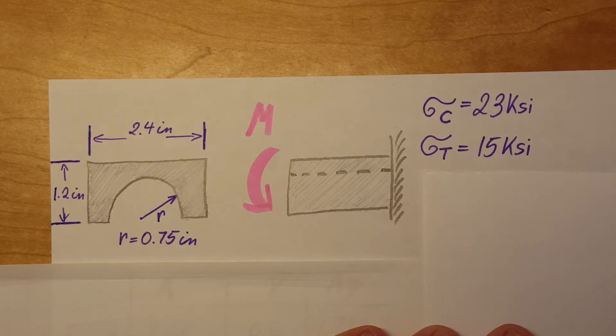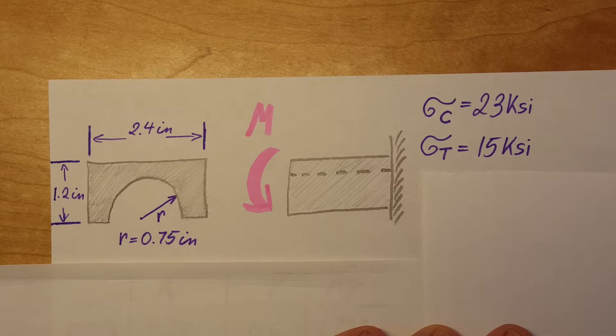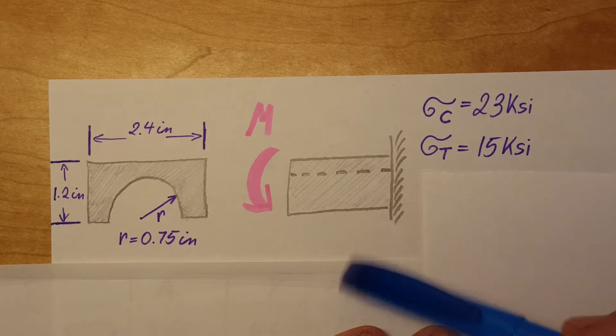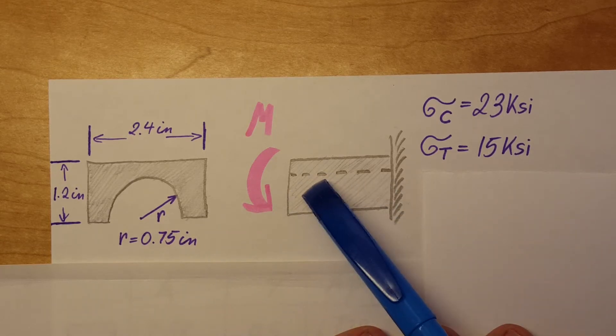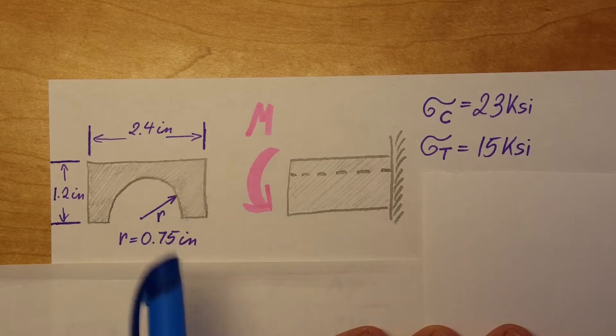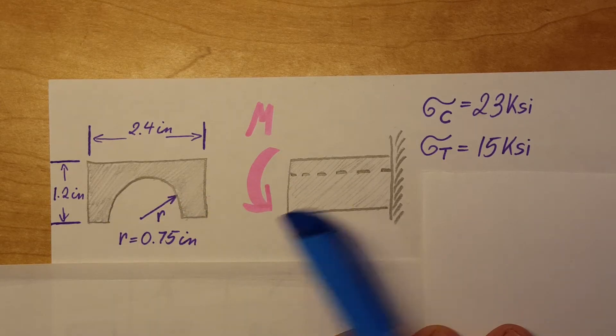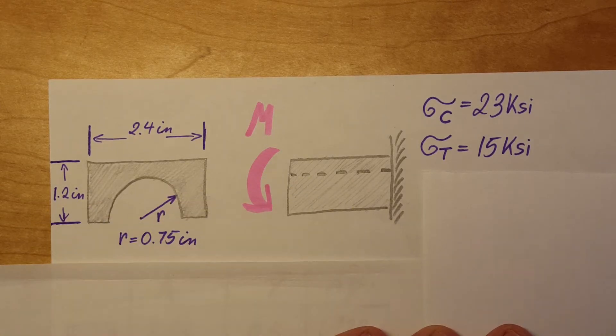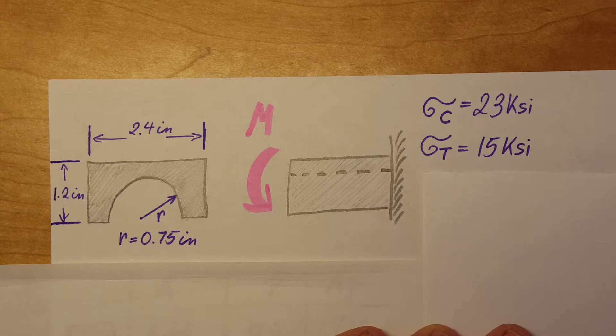This is a bending problem for strength of materials. For this beam we see here, and this is the cross-section of it, we know that it can handle a stress of 15 KSI in tension and 23 KSI in compression. We need to determine the largest couple M that can be applied to this material.